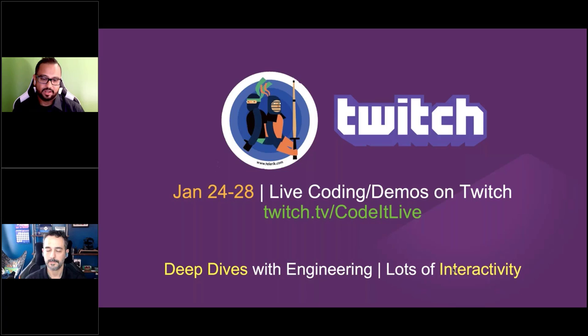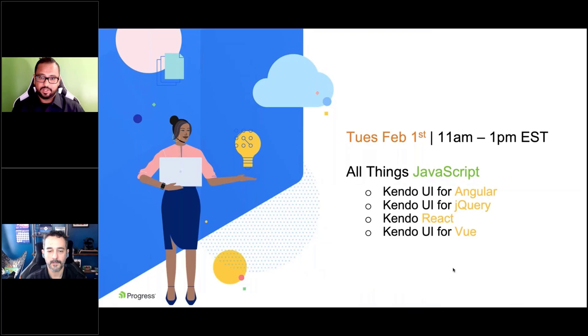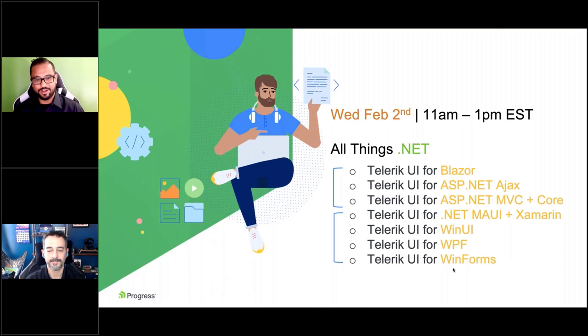We are big on Twitch, which is a platform where we all get together — the developer advocates — and do some live coding, have a little fun, and play around with code. Last week we had a whole week where we invited our engineering folks for an interactive live stream where we dug into some of the things that went into the release. The release has been out for about 10 days now. Yesterday, Tuesday February 1st, we started with all things JavaScript — our folks talked about Kendo UI for jQuery, Angular, React, and Vue.